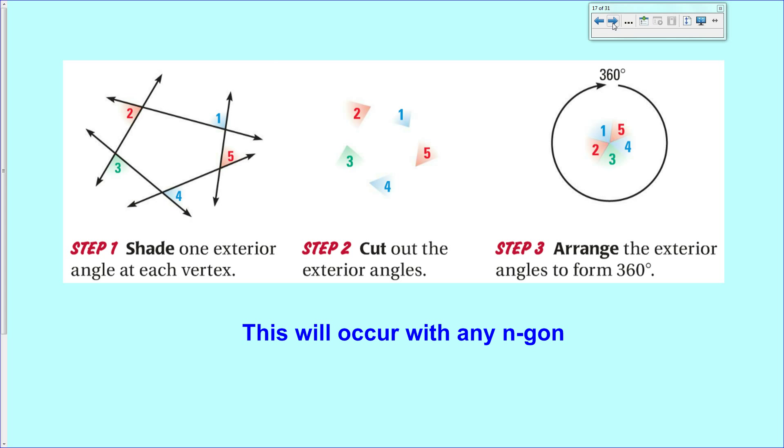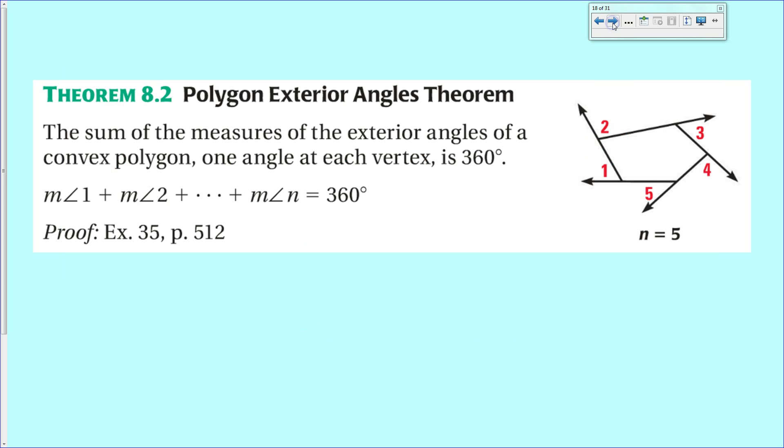So, any polygon whatsoever, its exterior angles add up to be 360 degrees, and that's theorem 8.2. And that's all theorem 8.2 is. It just simply says that if you add up all the exterior angles of any polygon, it will add up to be 360 degrees.